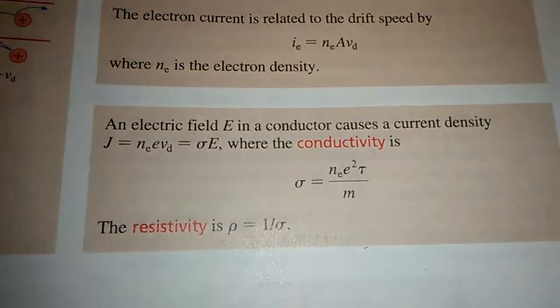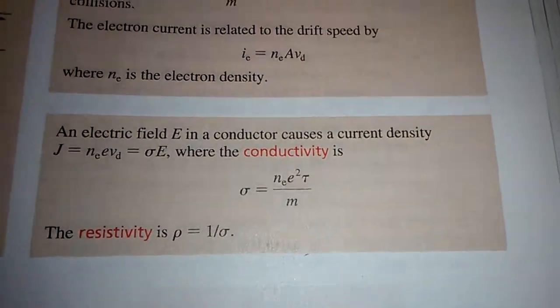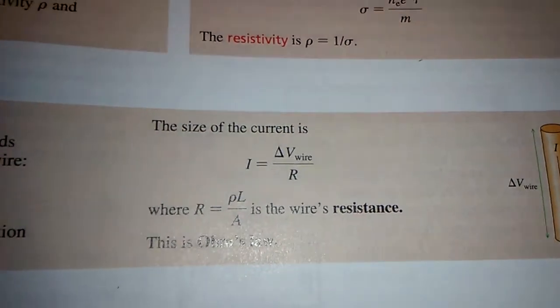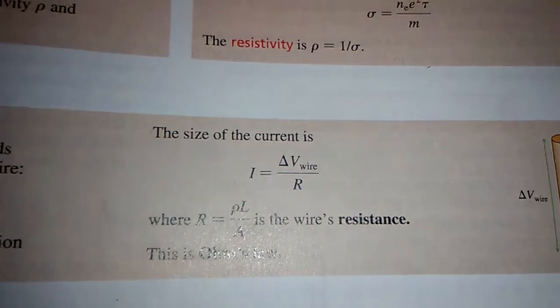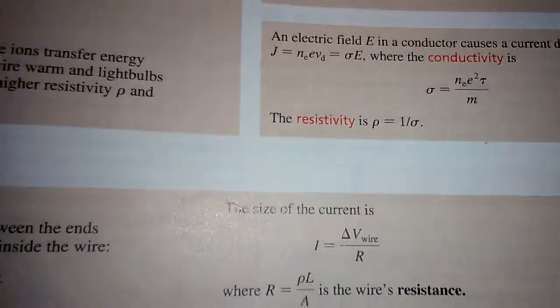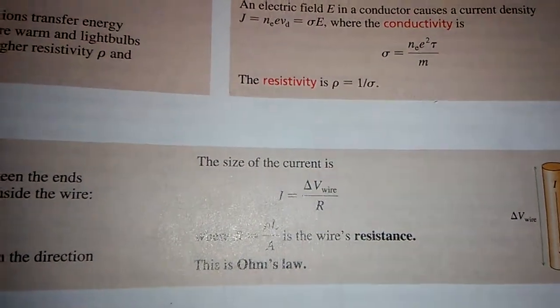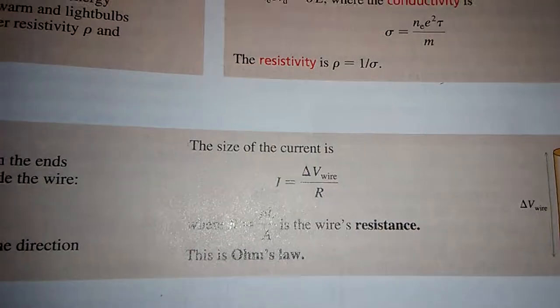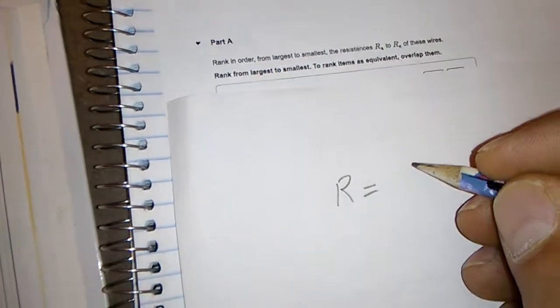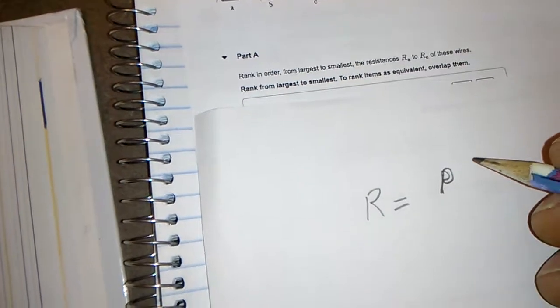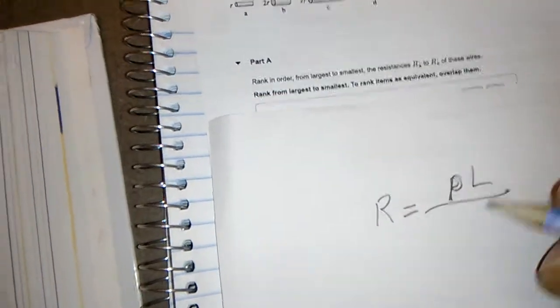First of all, we get a nice formula here for resistance. There it is. Resistance is equal to rho times length over A. So we'll use that. Resistance equals rho times length over A.